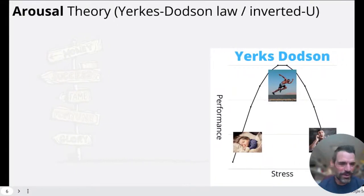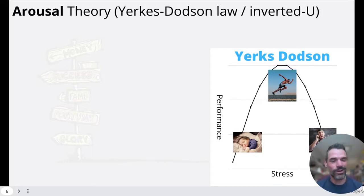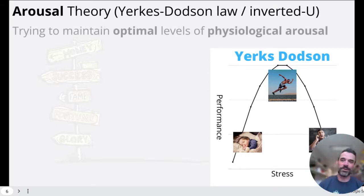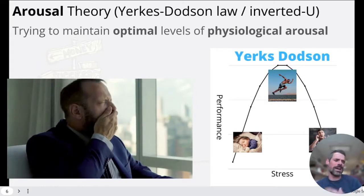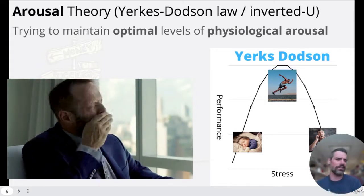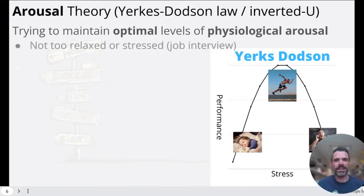We have arousal theory — also called the Yerkes-Dodson law, or the inverted U — about trying to maintain optimal levels of physical arousal. You don't want to be too low: you're lethargic, not thinking, kind of tired. You don't want to be too high: you're overstimulated and can't focus. You want that sweet spot right in the middle. So not too relaxed, not too stressed.